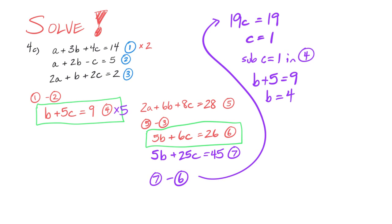Now I know that my c is 1, my b is 4. I can now sub c equals 1, b equals 4, back into one of the very original equations that was given. And maybe, I don't know, the smallest numbers seems to be equation 2. So I think that one's going to be the easiest for me. That means I've got a plus 2 times b, so 2 times 4, minus my c value, so minus 1 gives me 5. That means I've got an a plus 7, which gives me 5, which means a equals negative 2.